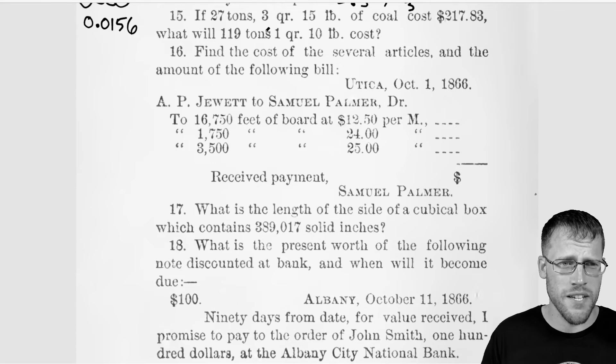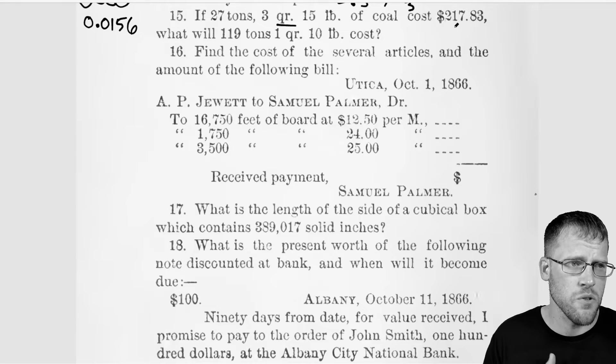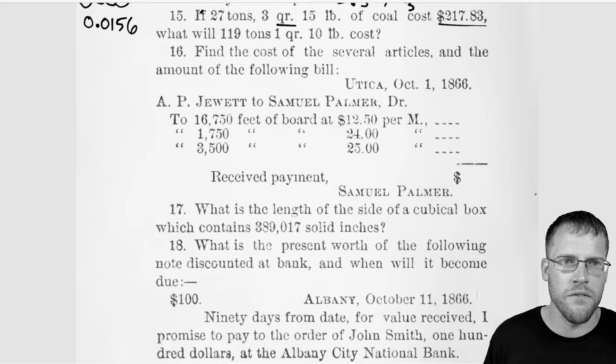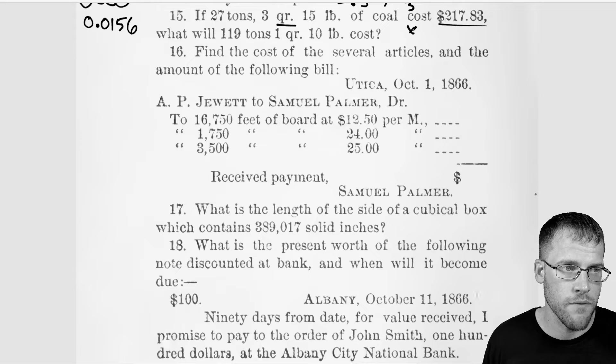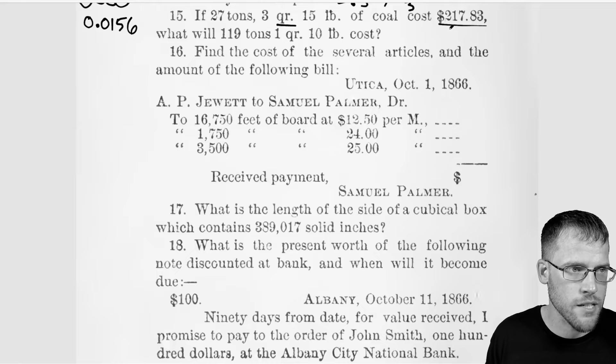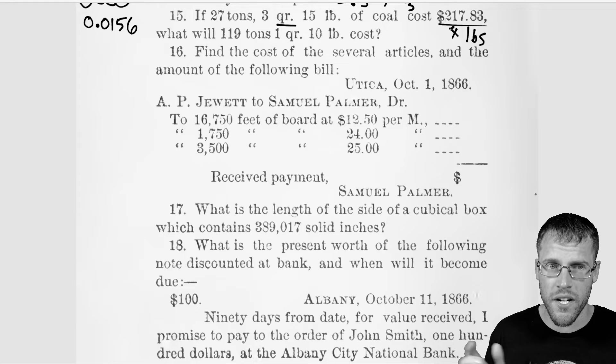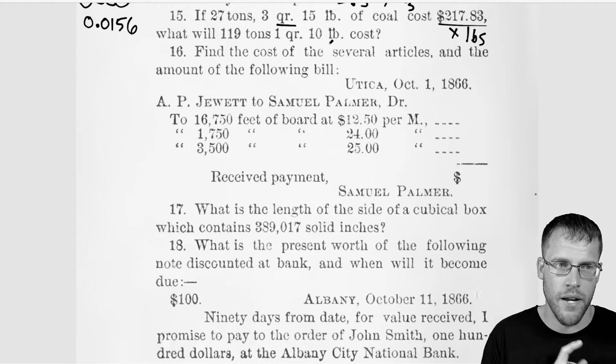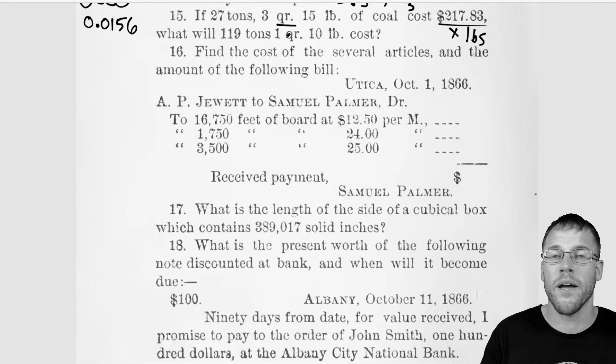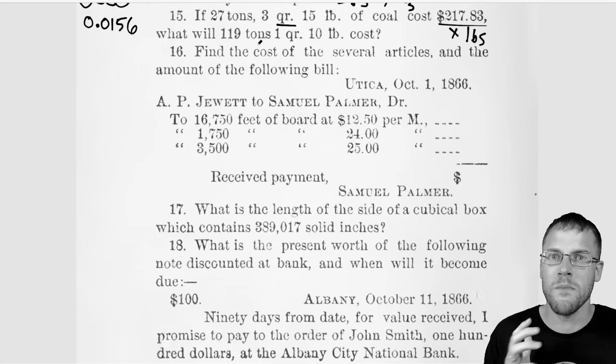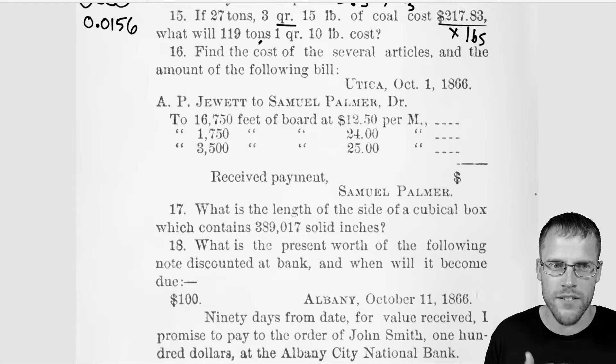So question 15, more units, 27 tons, 3, whatever QR is, 15 pounds of coal costs this much. What will 119 tons, 1 QR and 10 pounds cost? So for this one, I would convert the first one here all into, let's say, pounds. So once I know how many pounds we have, like X pounds and we have X pounds and I'll write it underneath this. I would say, all right, there's X pounds. So if we do 217.83 divided by X, that'll tell us the unit rate. And then once we know the unit rate, we turn this into pounds and we multiply the unit rate by the number of pounds for the second part. And that'll give us our answer here. But once again, I don't know what these units are. So that seems to be a common struggle here from 2023 going back to 1866.